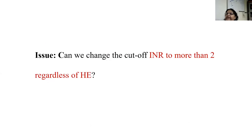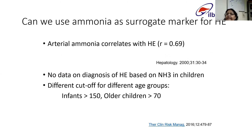Can we change the cutoff to INR more than two regardless of the hepatic encephalopathy? This is one question we should raise. Can we use ammonia as a surrogate marker of H-E? The problem with using ammonia is that it has different levels for different ages — hyperammonemia cutoffs are different for different ages. That is the problem we will face here.